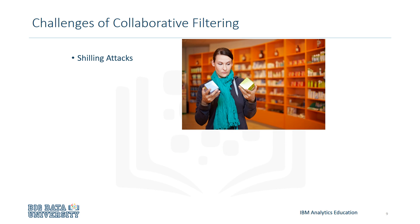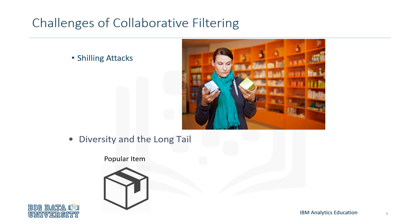In a recommendation system, users can give ratings on products they like or dislike. This is what collaborative filtering uses to determine good recommendations. However, shilling attacks are the abuse of this system by rating certain products high and other products low, regardless of personal opinion, therefore allowing that product to be recommended more often. In some recommendation systems, there is a lack of diversity for recommendations. This is because popular items get recommended more often simply because more users use them and rate them.